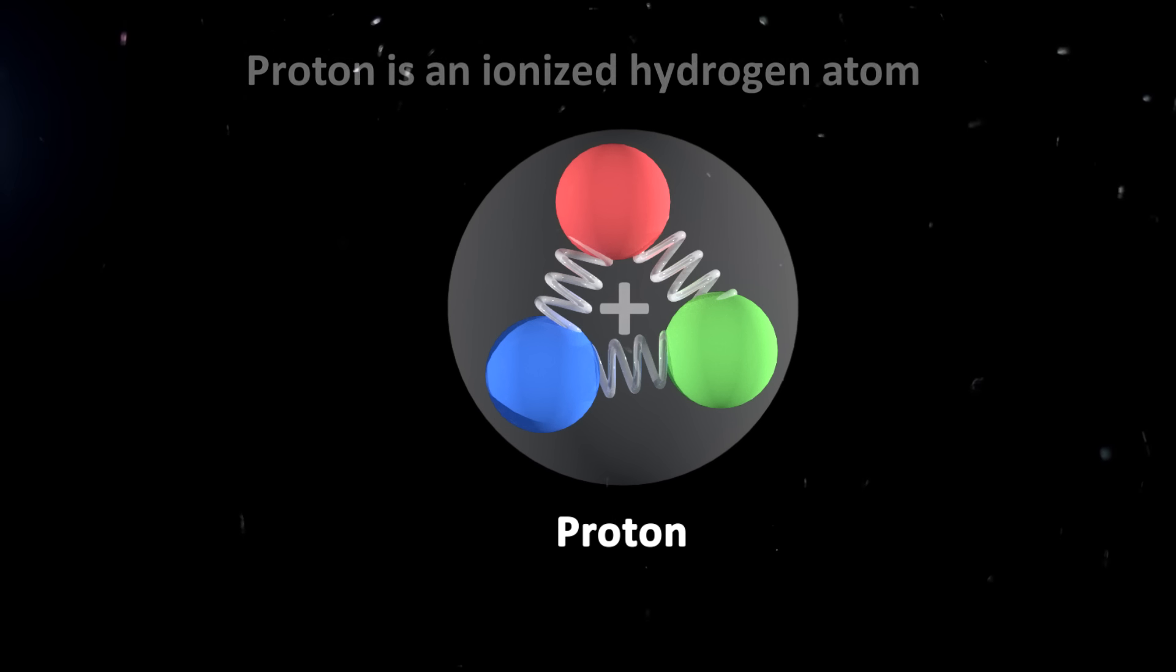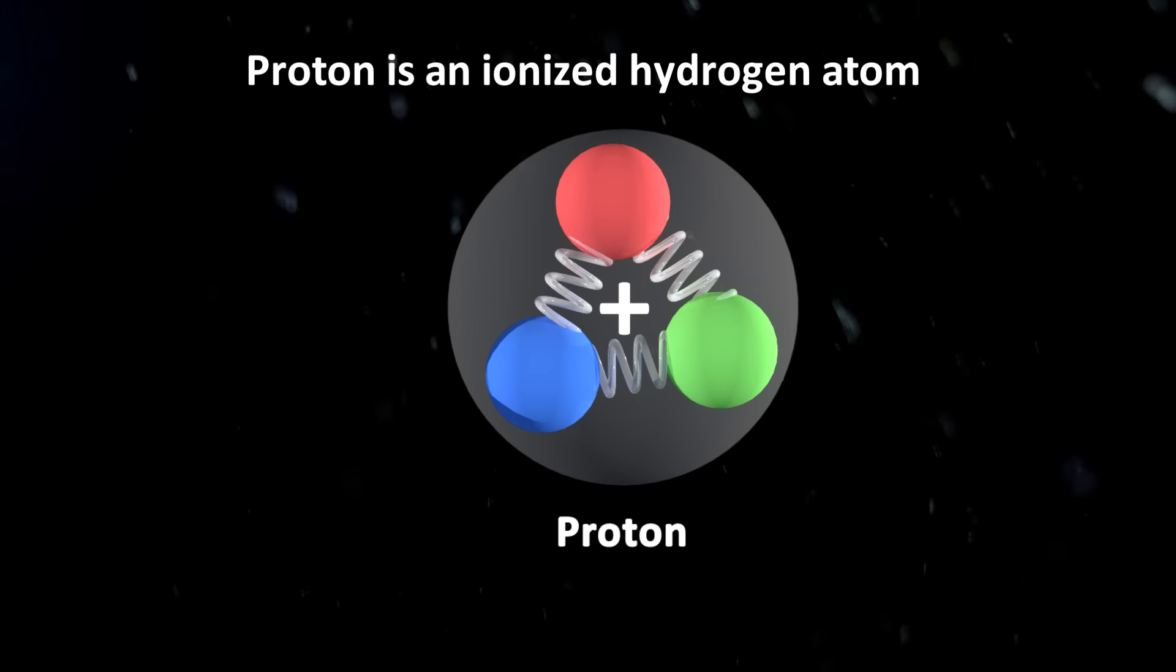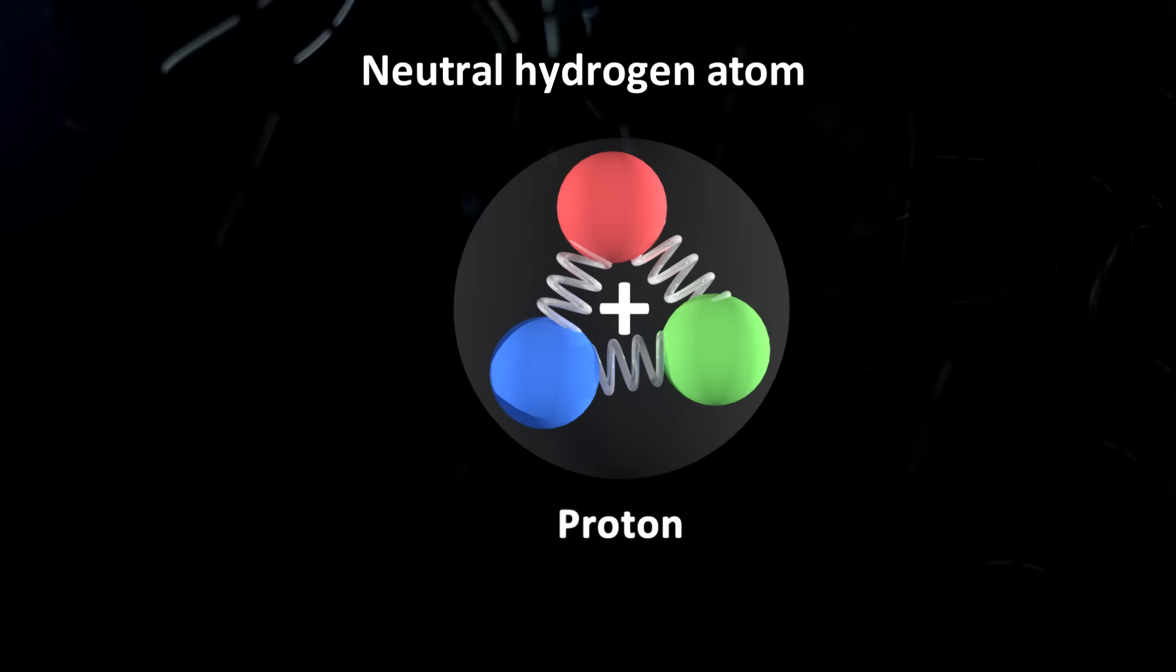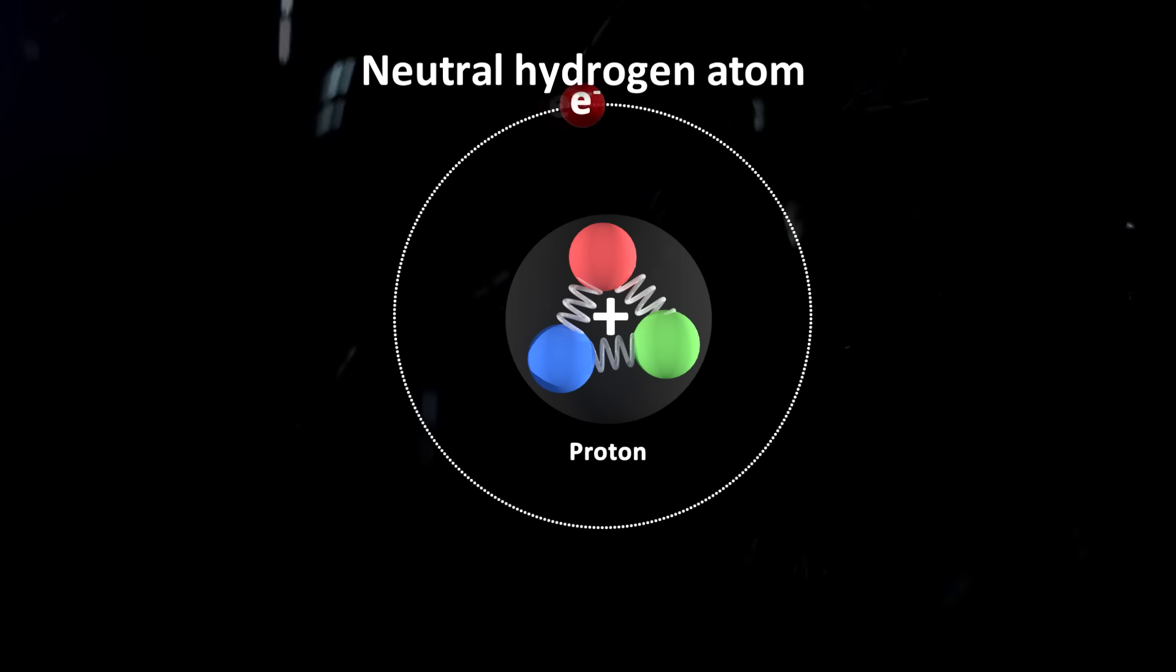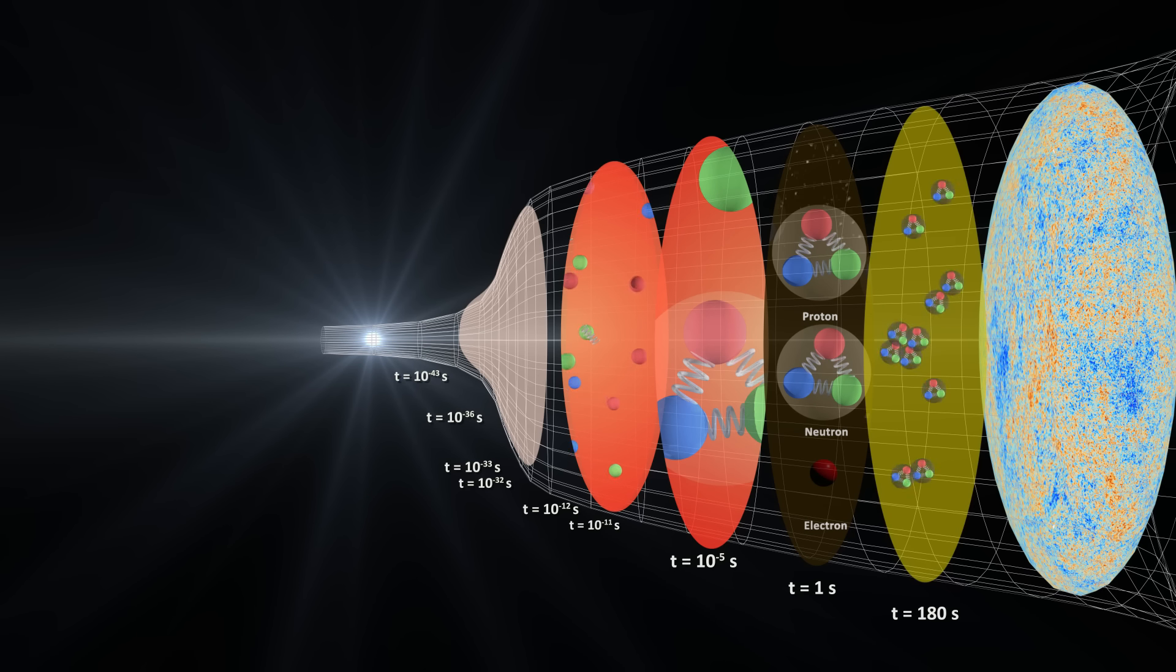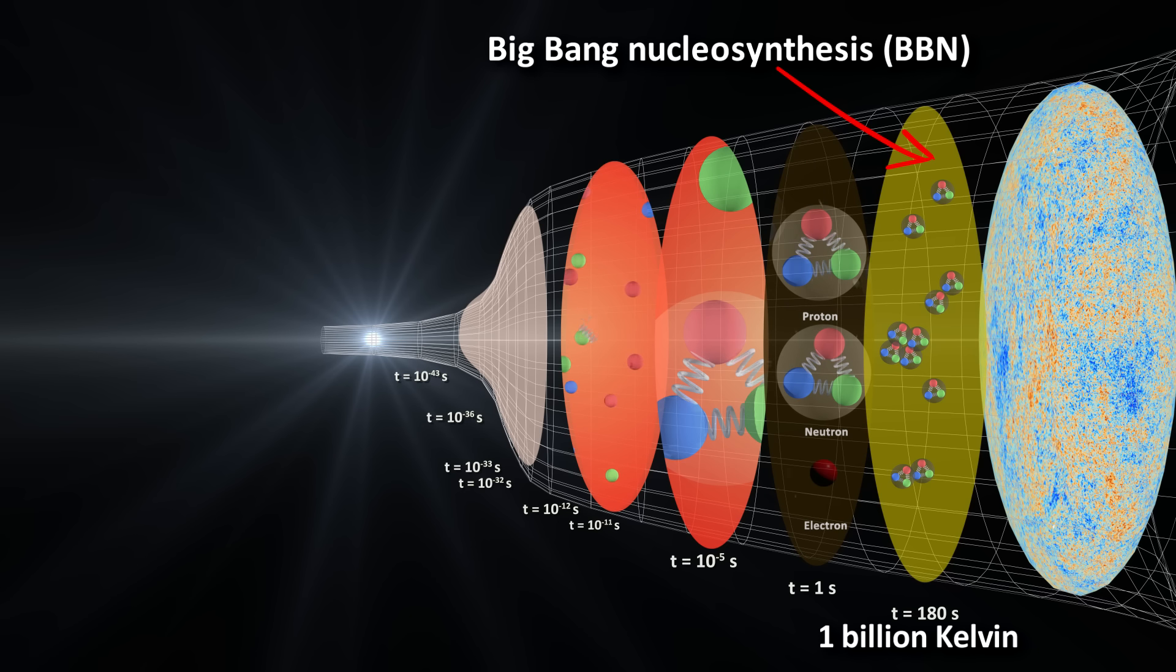Protons on their own are technically hydrogen nuclei. You can think of them as positively charged or ionized hydrogen atoms. But we are interested in where the stable, neutral atoms come from. To do this, more time had to pass, and physics had to do its thing. When the universe was a few minutes old, the temperature dropped below 1 billion Kelvin, and it reached the point of the big bang nucleosynthesis, also called the BBN.